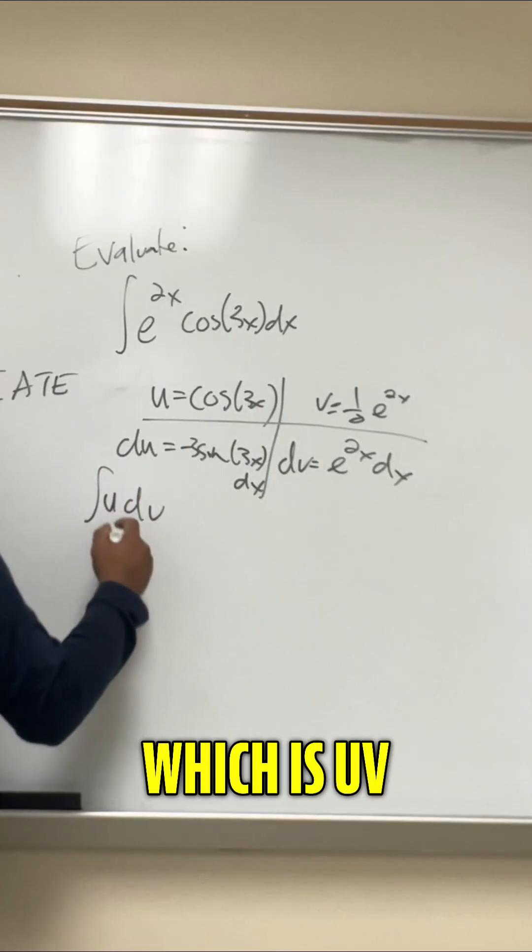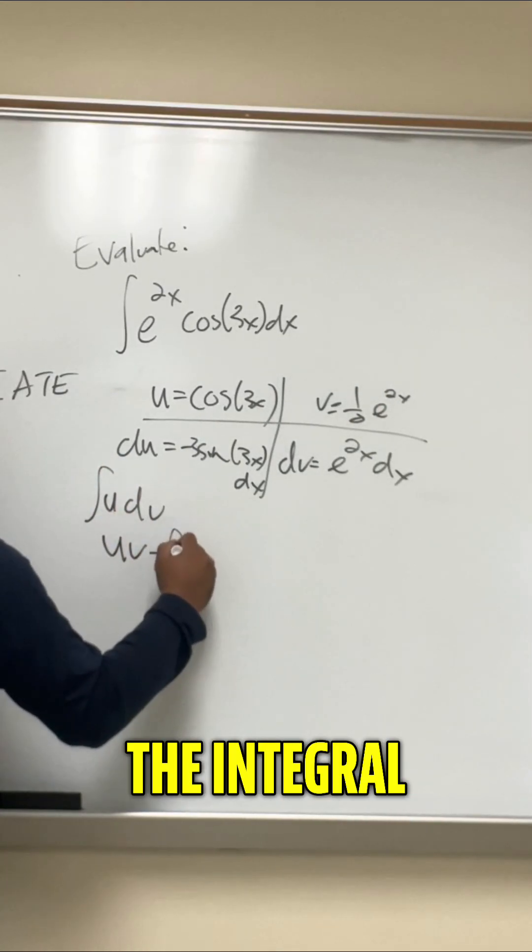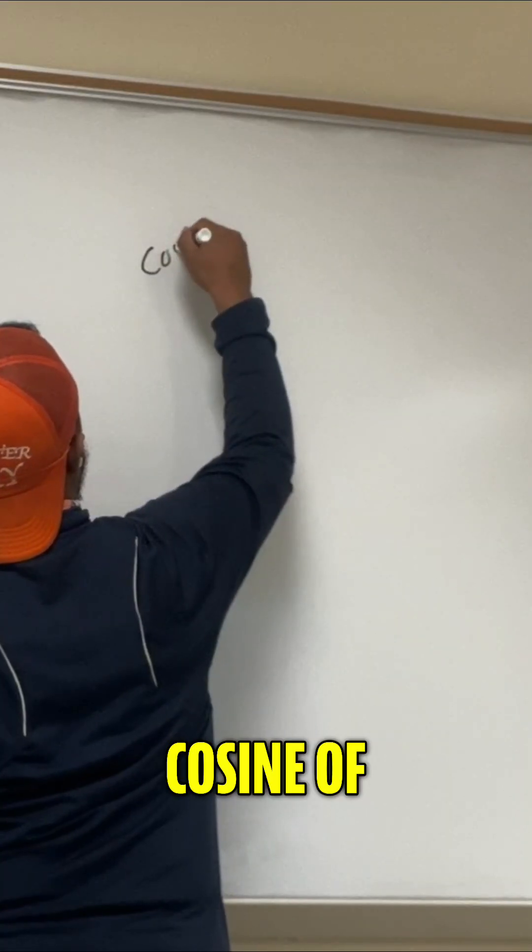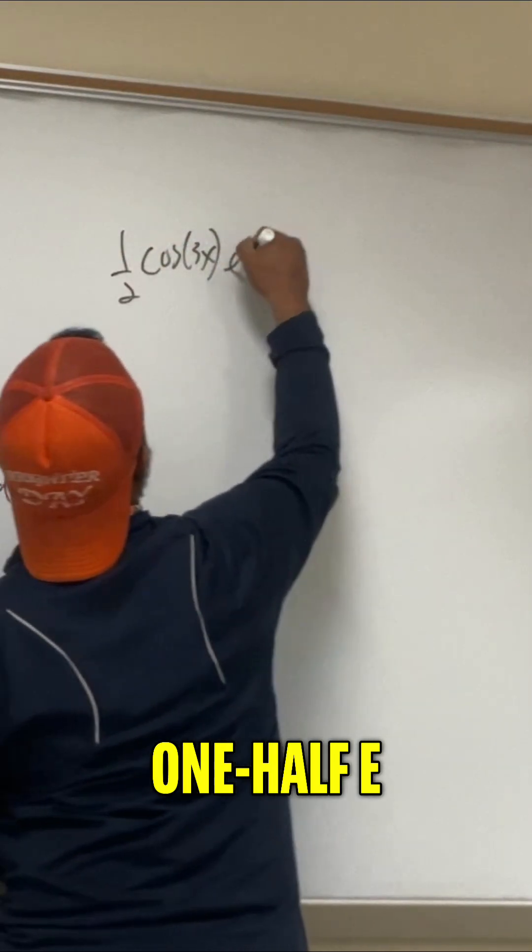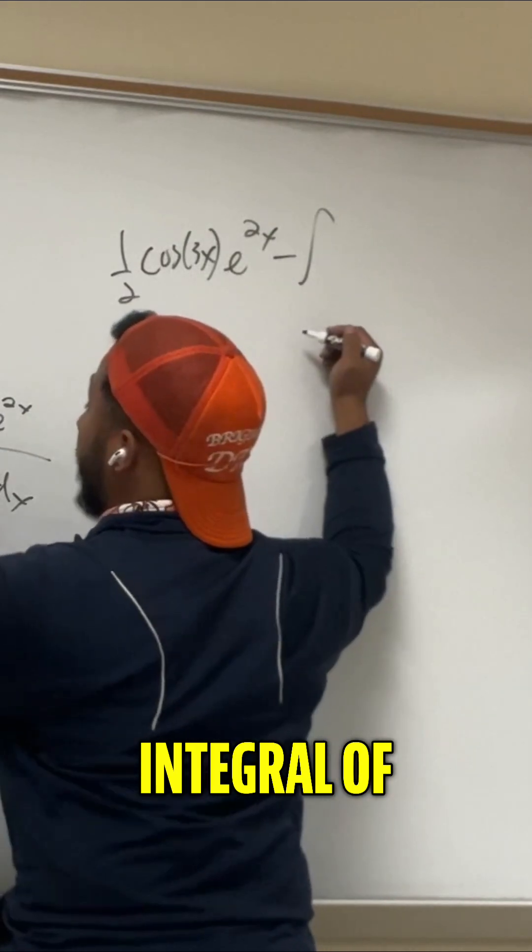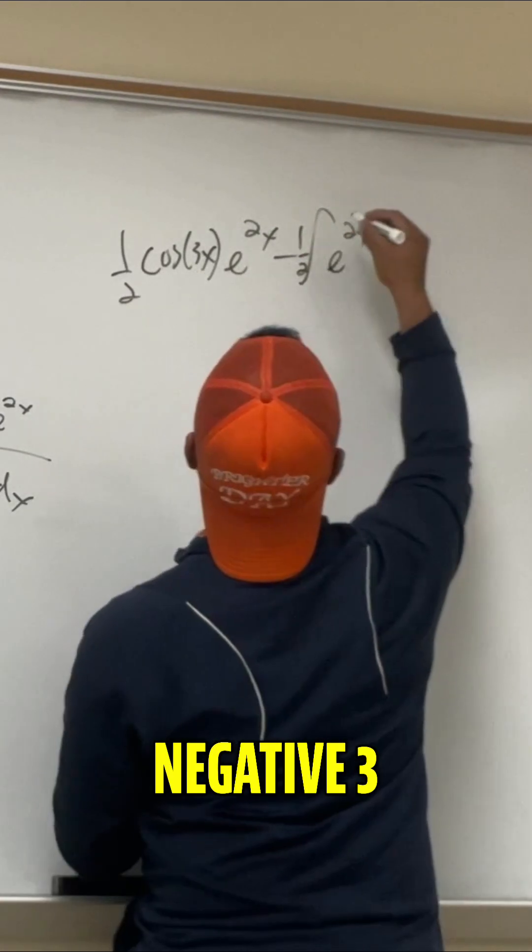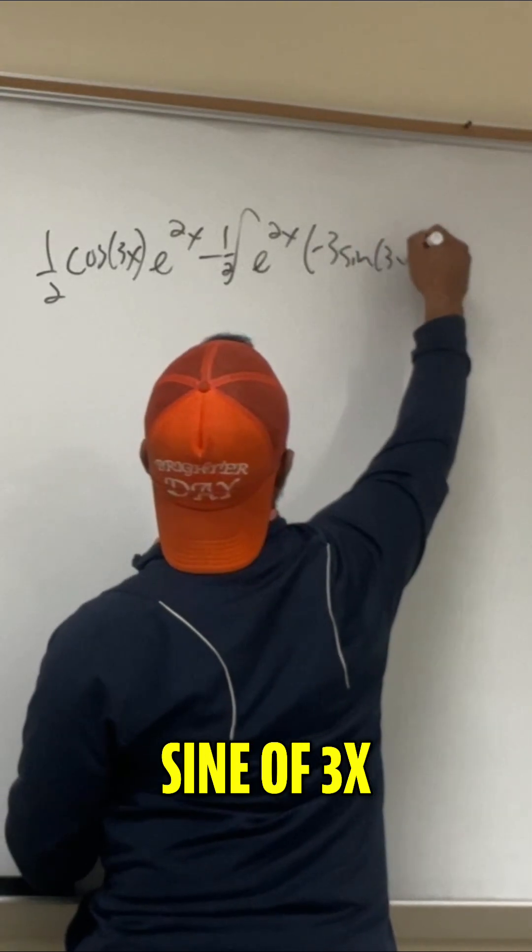The integral of udv, which is uv minus the integral of vdu. In other words, ultraviolet voodoo. Cosine of 3x times that v, which is 1 half e to the 2x, minus the integral of 1 half e to the 2x times negative 3 sine of 3x dx.